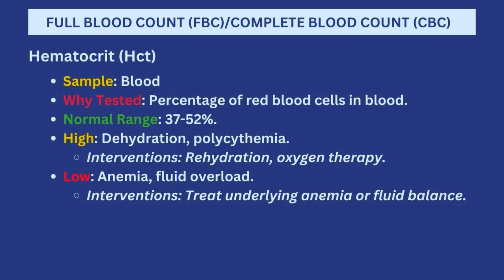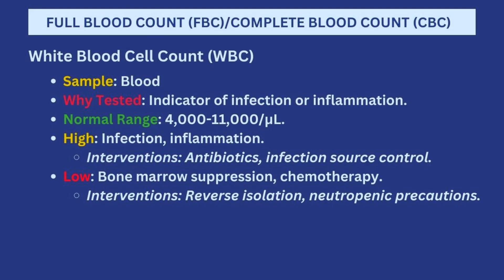Next is the hematocrit level, which is tested to know the percentage of red blood cells in the blood. Ideally it should be between 37 to 52 percent. When the hematocrit level is high, that points towards dehydration and polycythemia, and you'll be thinking of rehydrating the patient either by oral fluids or IV fluids, then giving oxygen therapy as well. If it is low, that indicates anemia and could also be because of fluid overload, so you need to treat the underlying anemia and monitor fluid balance.